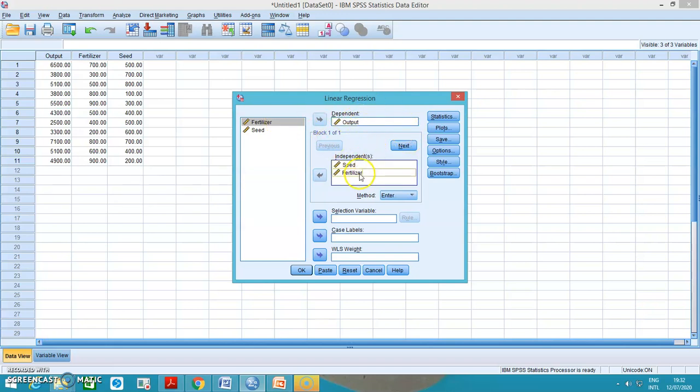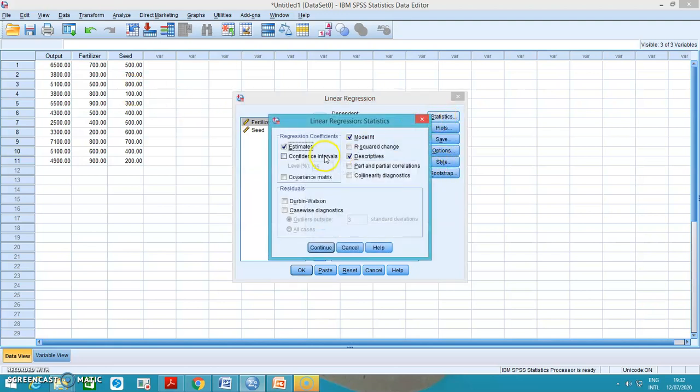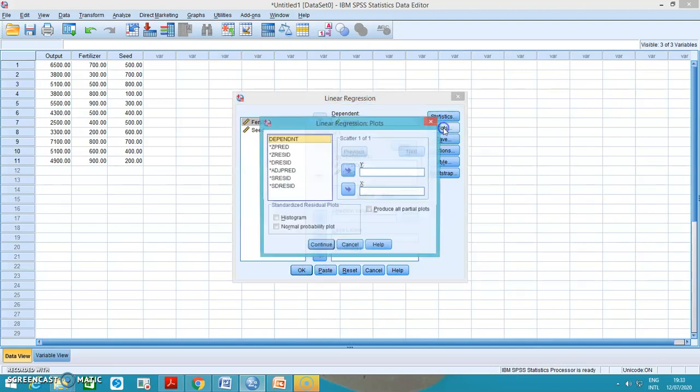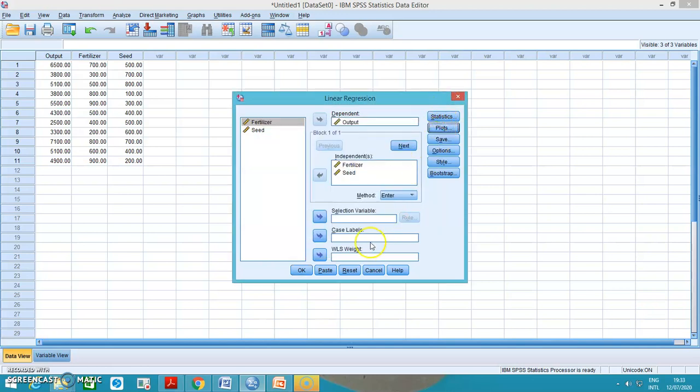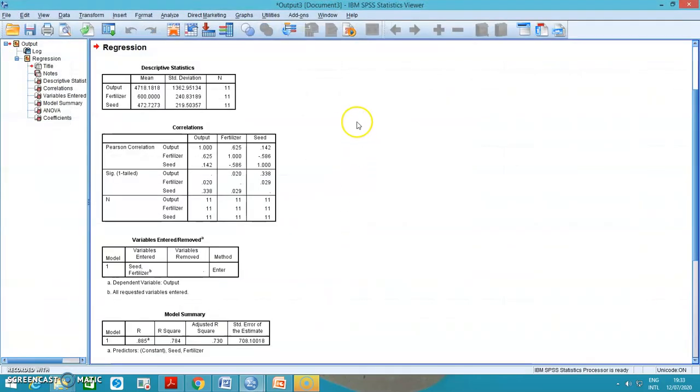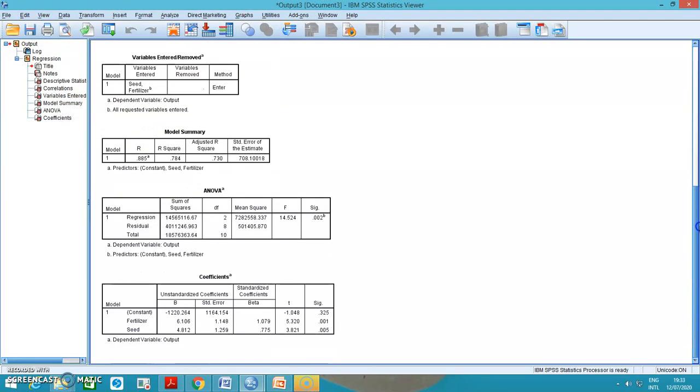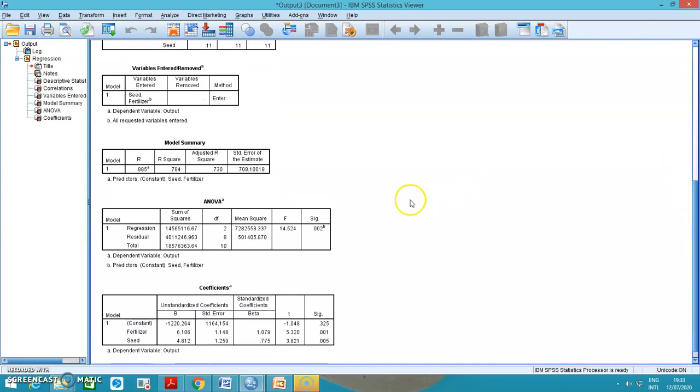Here what we need to do is select the dependent variable, which is output, and the independent variables, which are fertilizer and seed. In the statistics column, we have many options to fit the model including descriptives and Durbin-Watson. Just continue, and we have plots also, but we do not do that now. Just click okay. When you click okay, it will generate certain output.